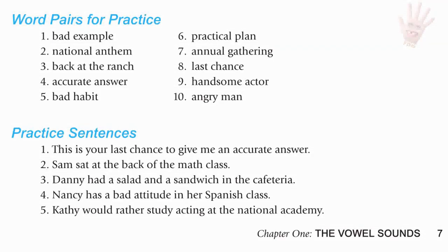Word pairs for A: bad example, national anthem, back at the ranch, accurate answer, bad habit, practical plan, annual gathering, last chance, handsome actor, angry man.